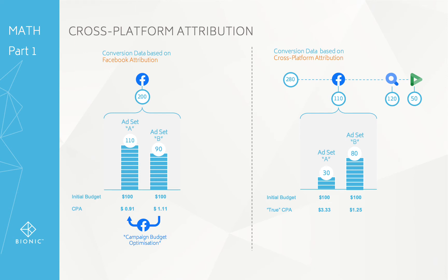Why might this be the case? If you take Ad Set B, it's given credit for 80 conversions. Ad Set B is probably further down the funnel — it could be a dynamic product ad, it could have urgency built in, a call to action, or a special offer. So it's more likely to drive and take more responsibility for the conversions. Ad Set A, on the other hand, might be much more top of funnel — it's doing some work, but it's not driving conversions according to the attribution model.